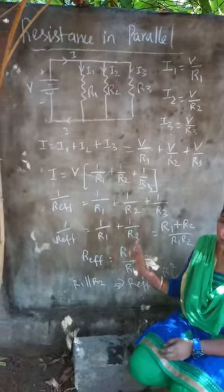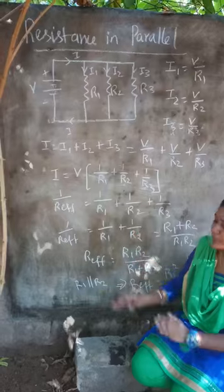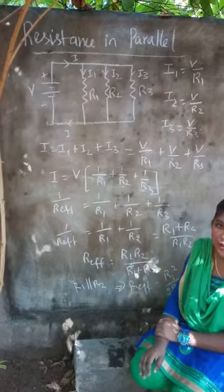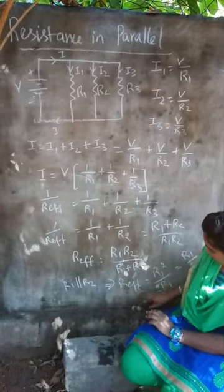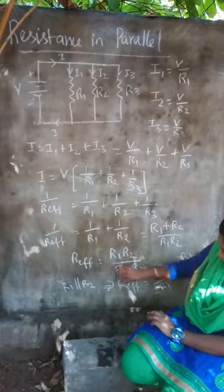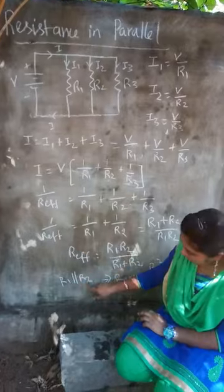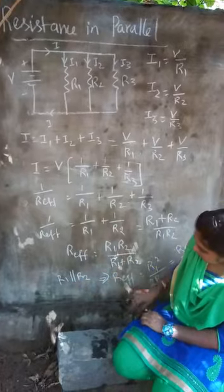So when two resistances R1 and R2 are in parallel, the effective resistance is R1 multiplied by R2, divided by R1 plus R2.